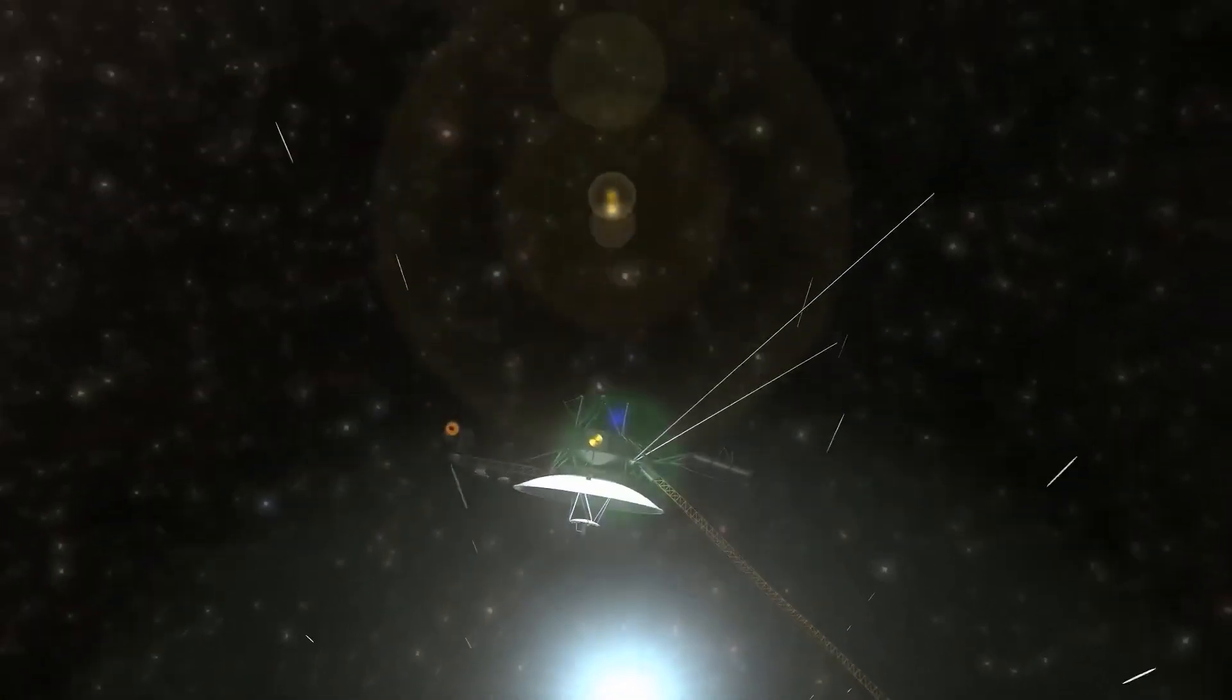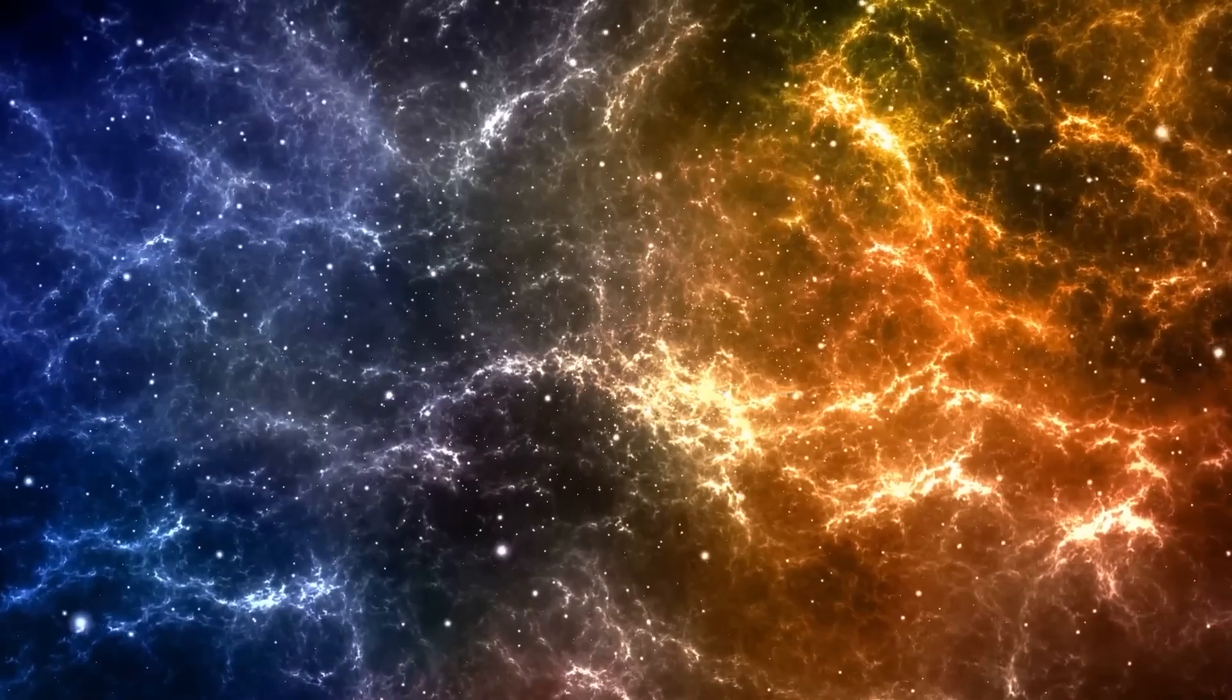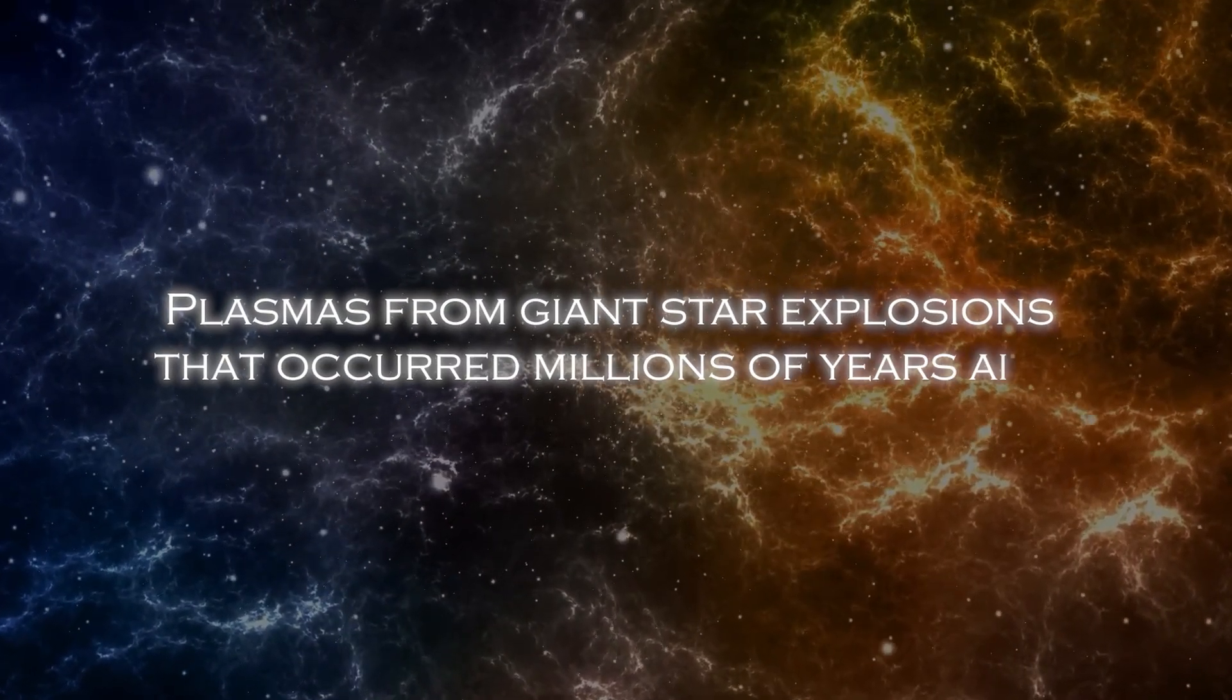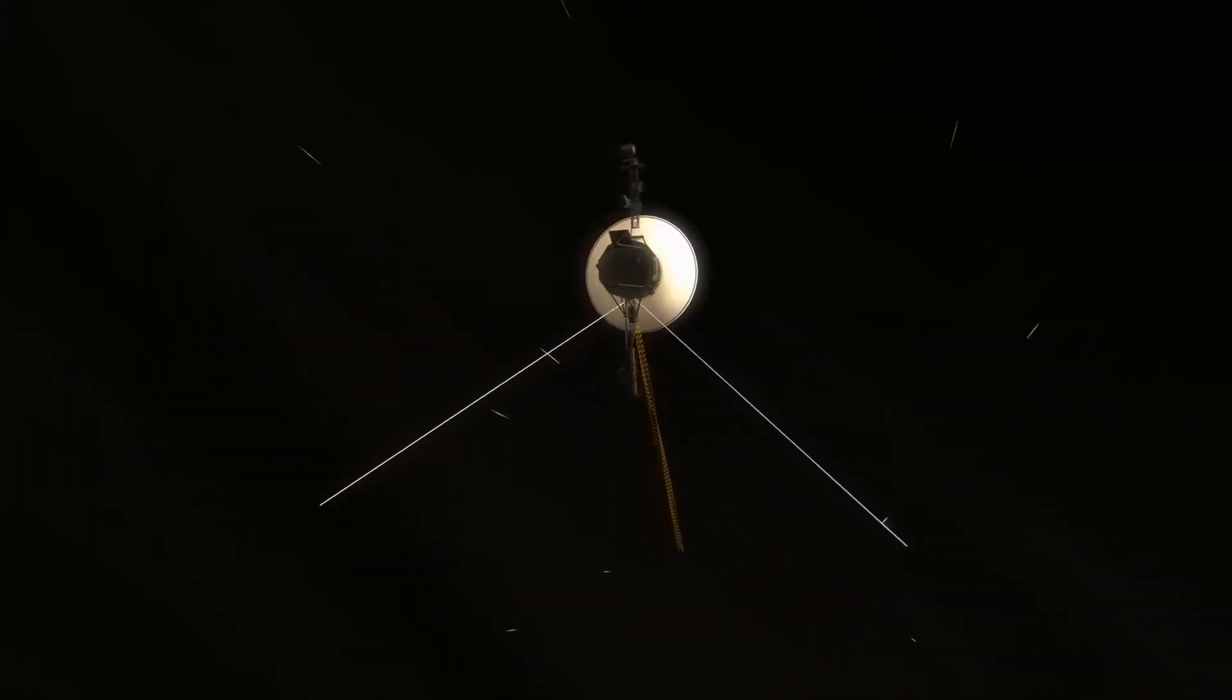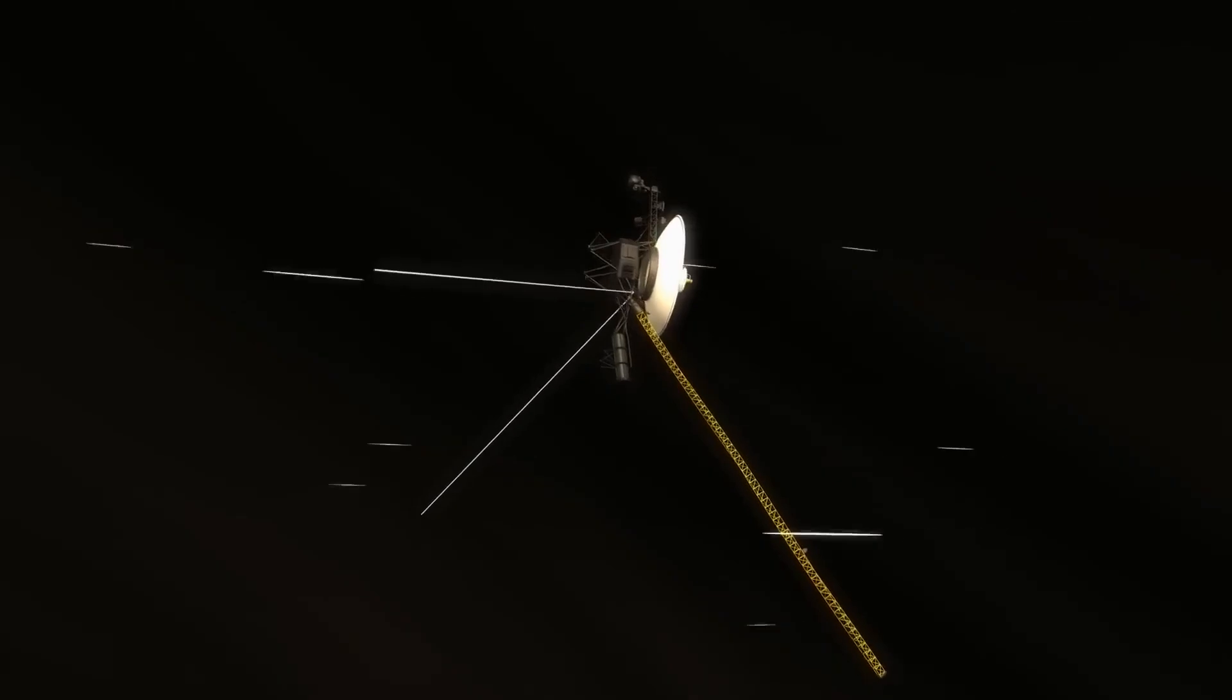Now, Voyager 1 has detected the presence of 300 unknown objects passing through space. This discovery has completely changed our understanding as these objects have been found to be plasma from giant star explosions that occurred millions of years ago. Join us on this journey through the cosmos to find out what these objects discovered by Voyager 1 are all about.